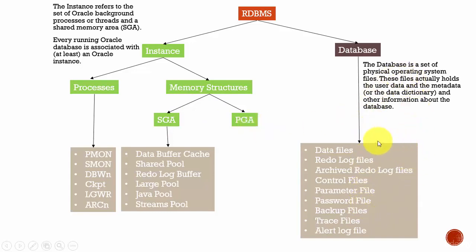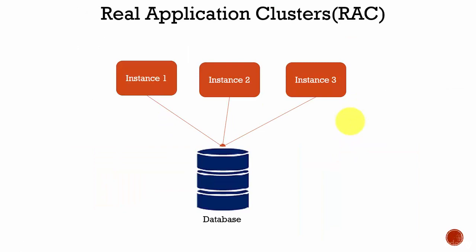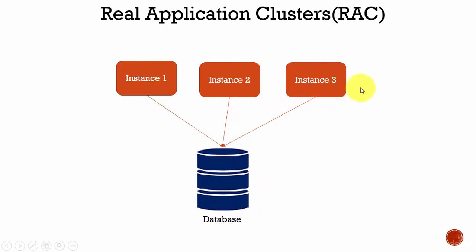A database refers to the set of physical operating system files. Every running database must be associated with at least one instance — the database should be associated with at least one instance. But the database can be connected to more instances if necessary. You see here, we have connected three instances to the database. What is the need of connecting three instances to the database?